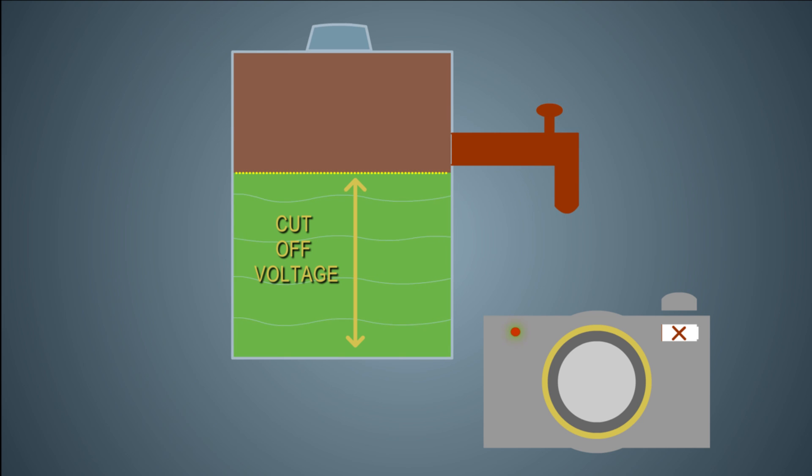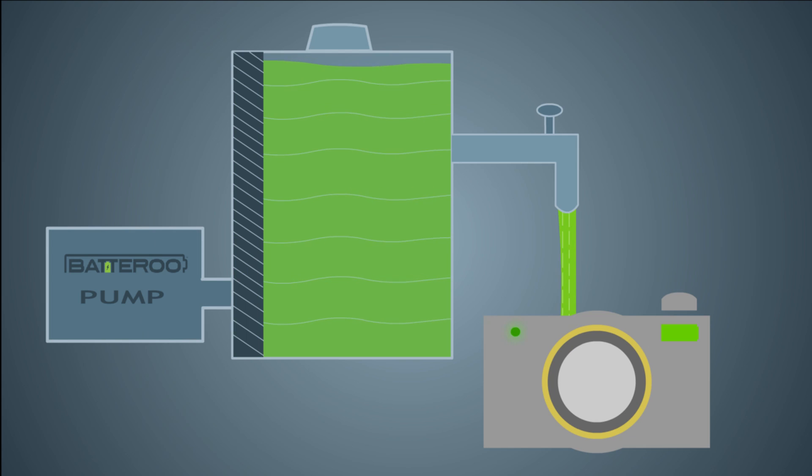There is still juice left in the container, but since it is below the cutoff voltage level, it cannot be used. Now imagine the side of that container has a pump behind the wall, constantly inflating as juice is draining.